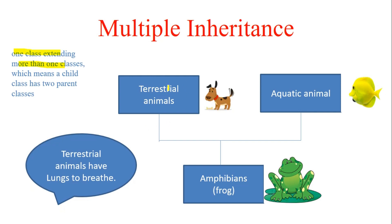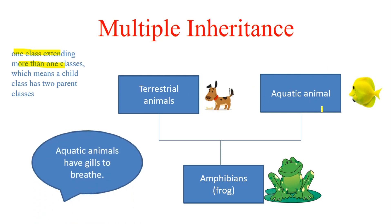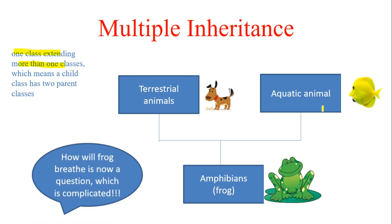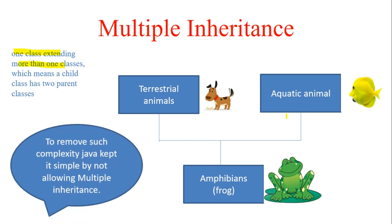Terrestrial animals have lungs to breathe on land; aquatic animals have gills to breathe in water. Amphibians need both — they have lungs for land and gill-like structures for water, making it very complex. In Java, to remove such complexity, multiple inheritance through classes is not allowed. Java avoids the ambiguity that arises when a class inherits conflicting methods from more than one parent.